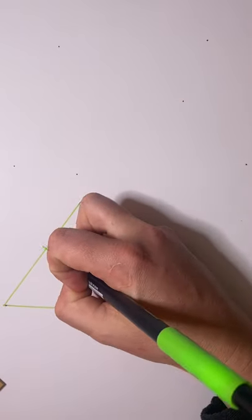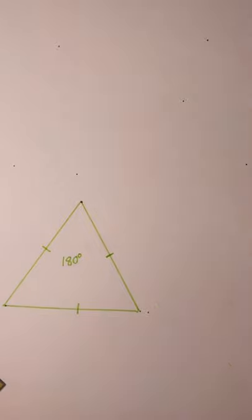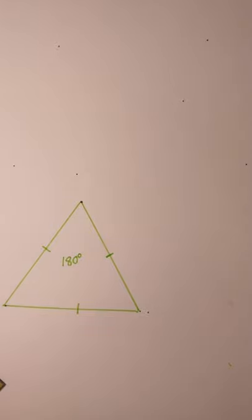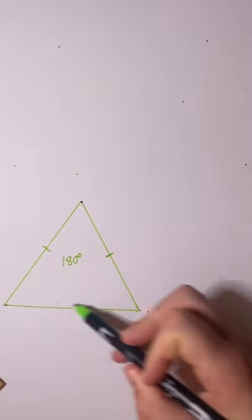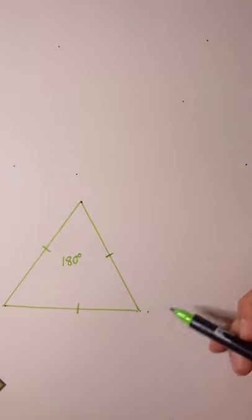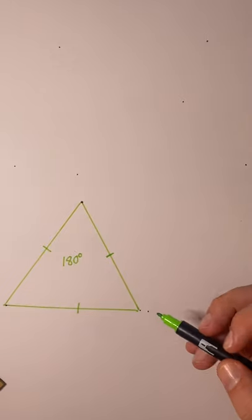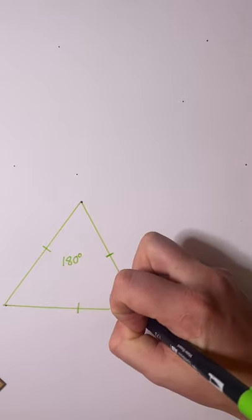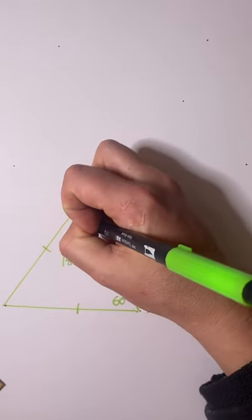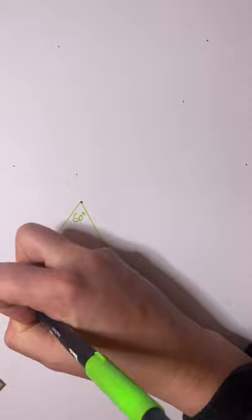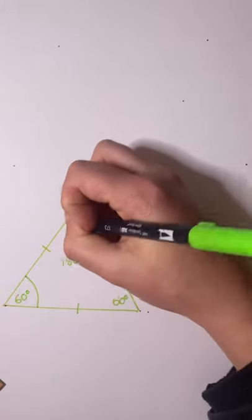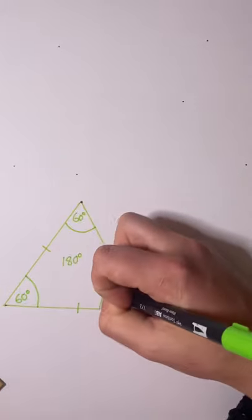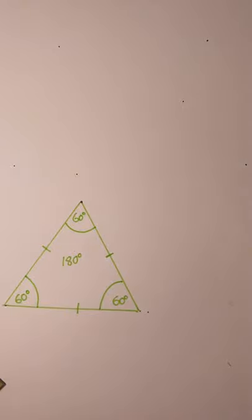Now every triangle has its angles adding up to 180 degrees. And if all these lines are equal, then these angles are equal as well. So 180 divided by 3 is 60. So every one of these angles is 60 degrees. And we know that means that they are acute from our working angles in our last unit. So this is an equilateral triangle, all the angles are equal, all the sides are equal.